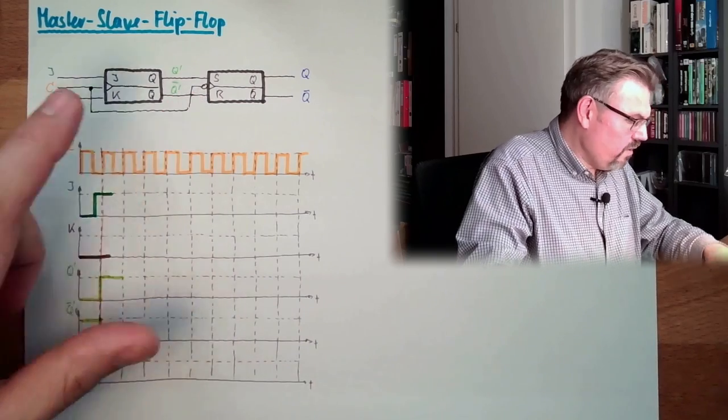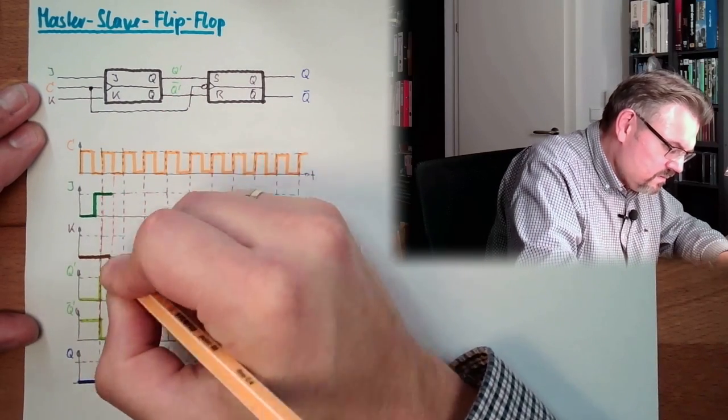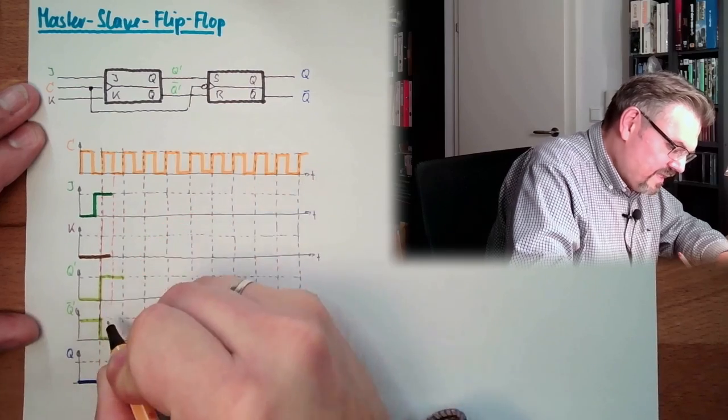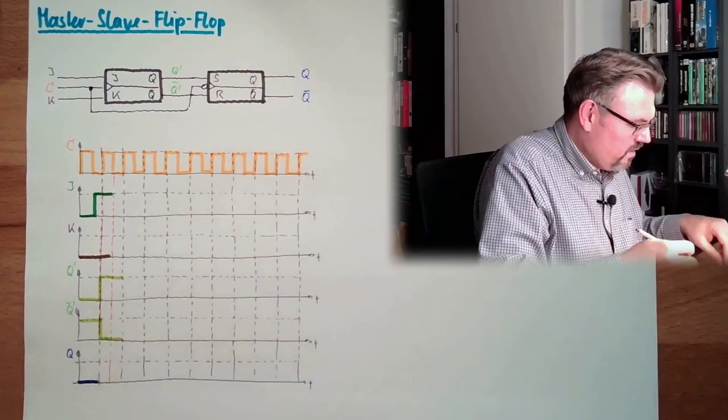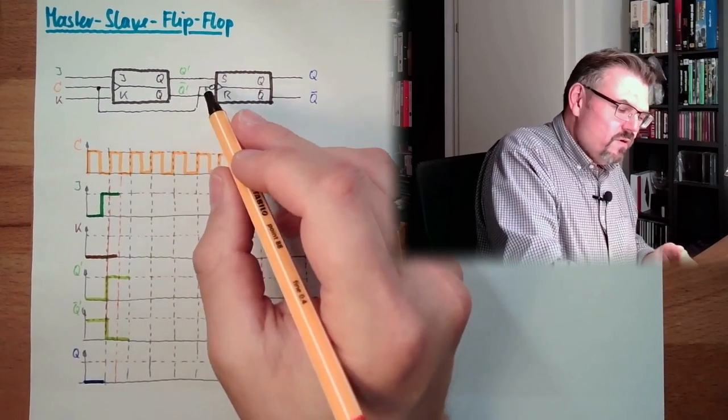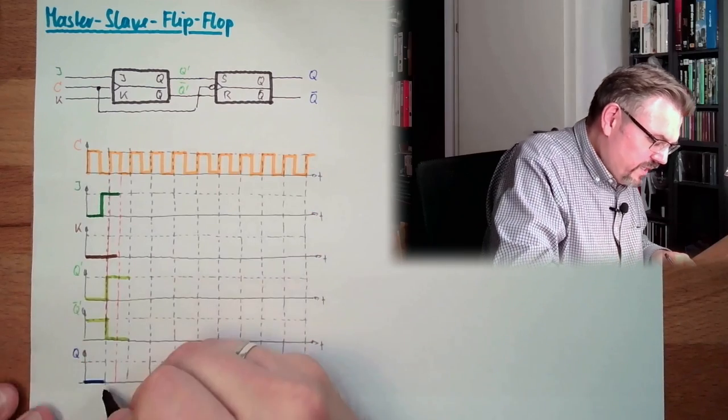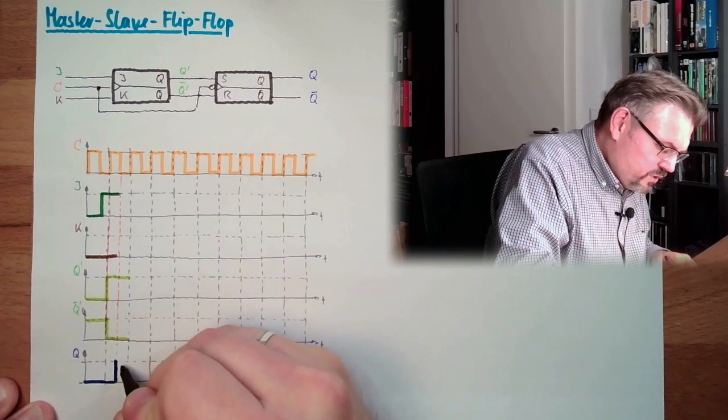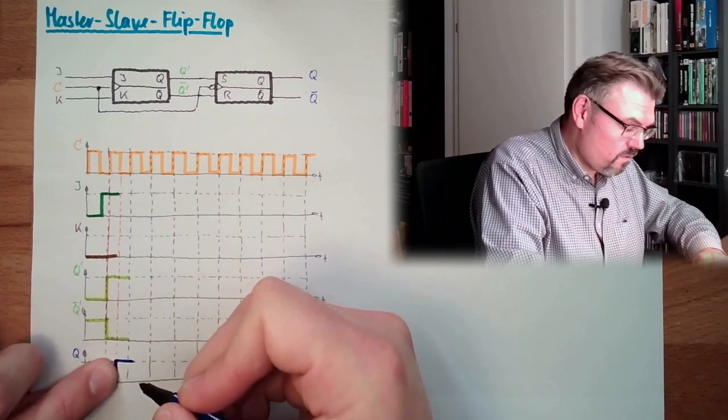And at the falling edge, at the following falling edge, this state will appear at the output. So, because we first take it in and only after a while, only we change here, the output changes here. So, we have here rising edge triggered, falling edge triggered.